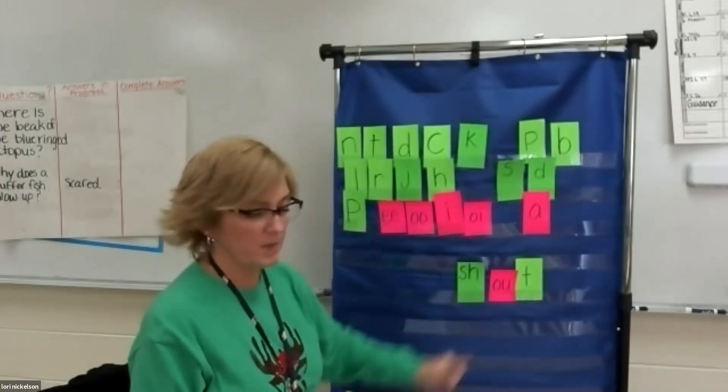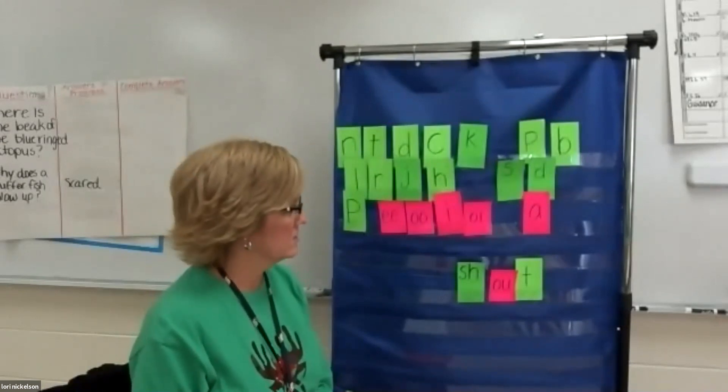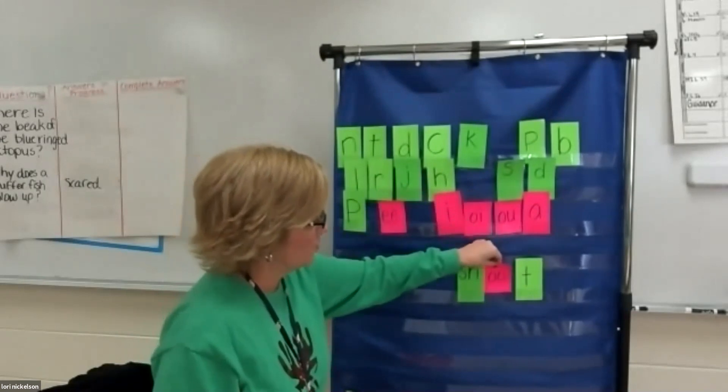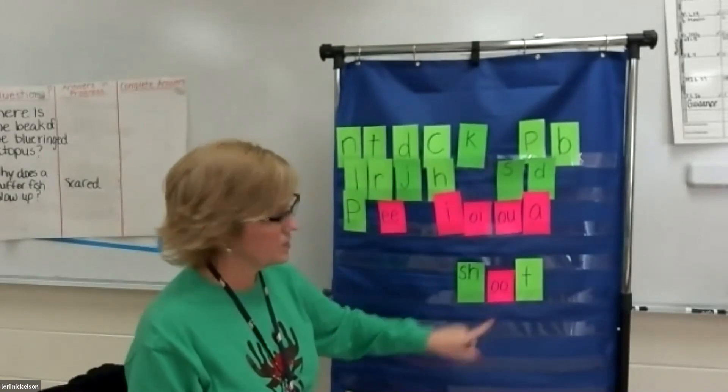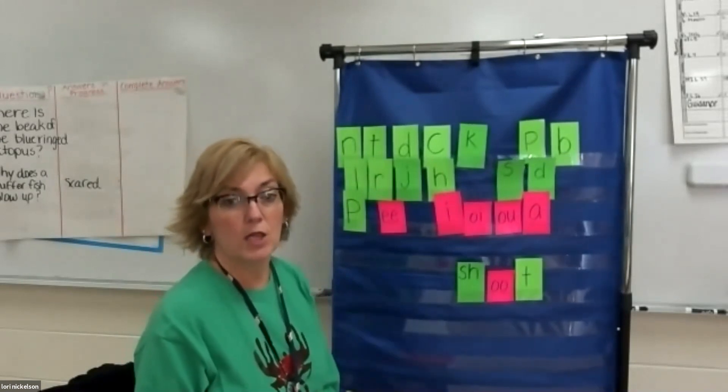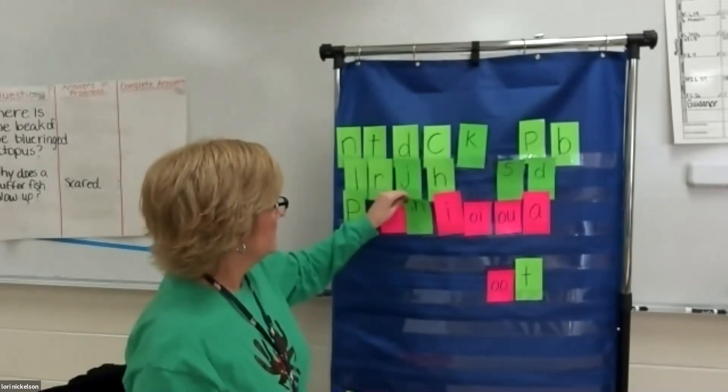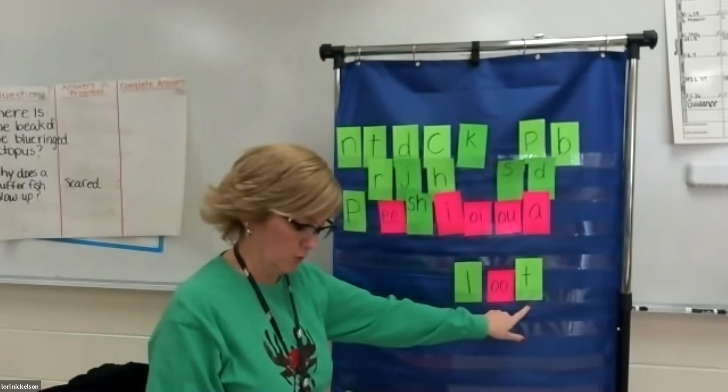From shout, I want to make the word shoot. What makes the oo sound? Two O's. So I'm going to replace the O-U with two O's. And now I have shoot. From shoot, I want to make the word loot. How would I do that? Take the S-H off and replace it with the L. And now I have loot. Good.